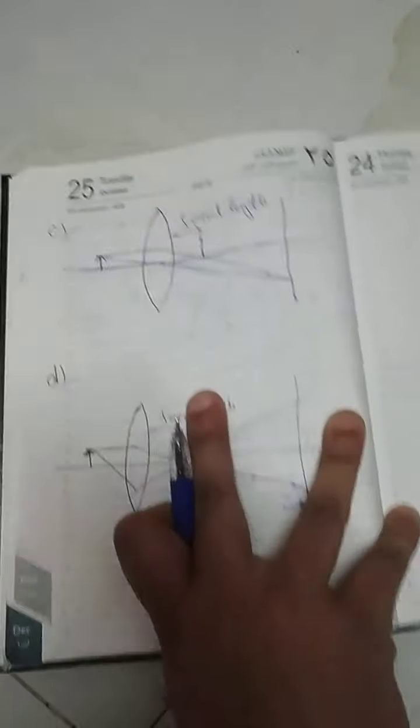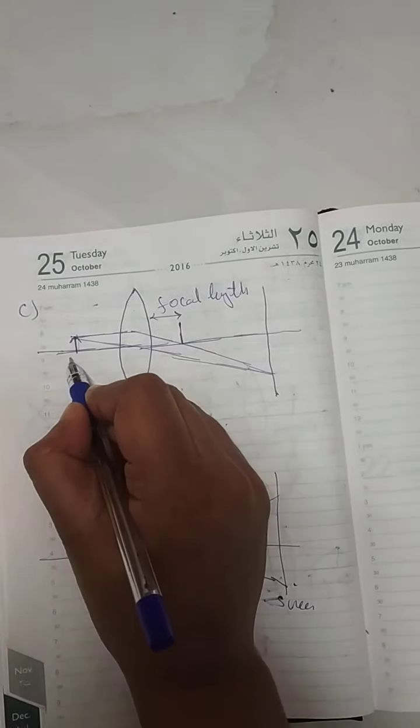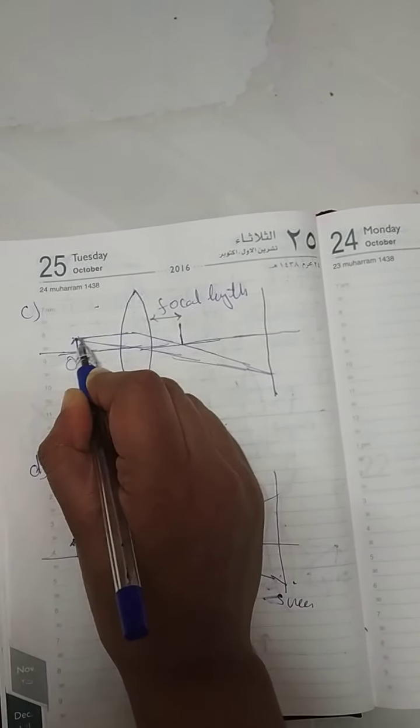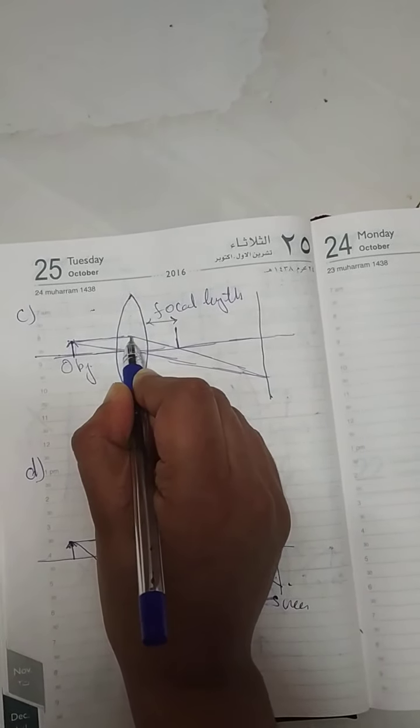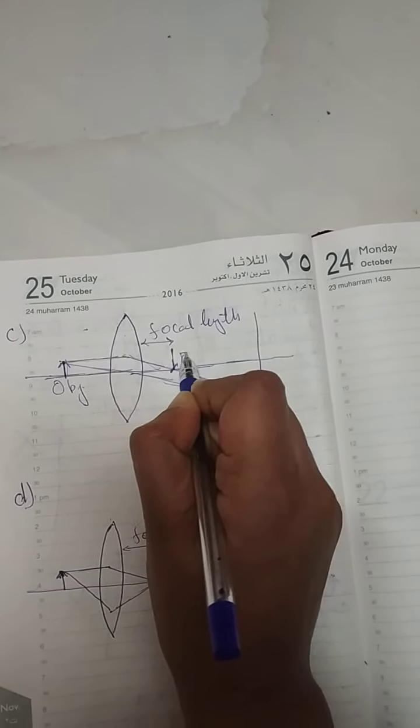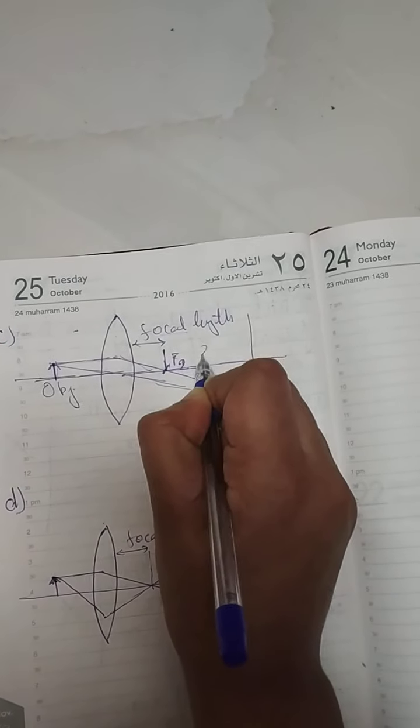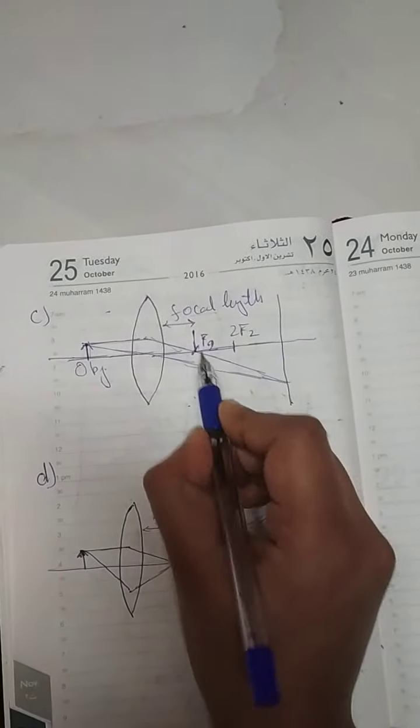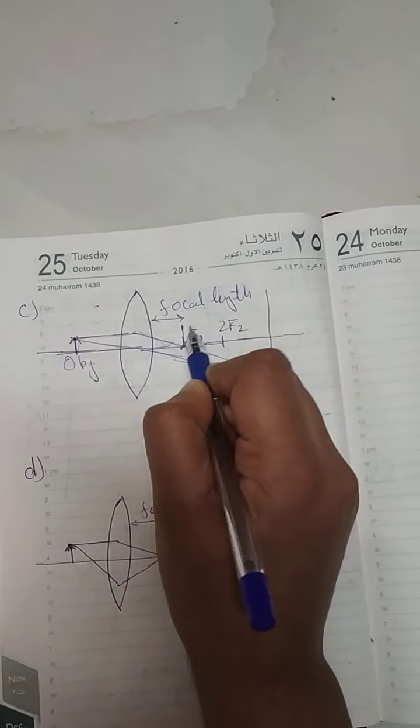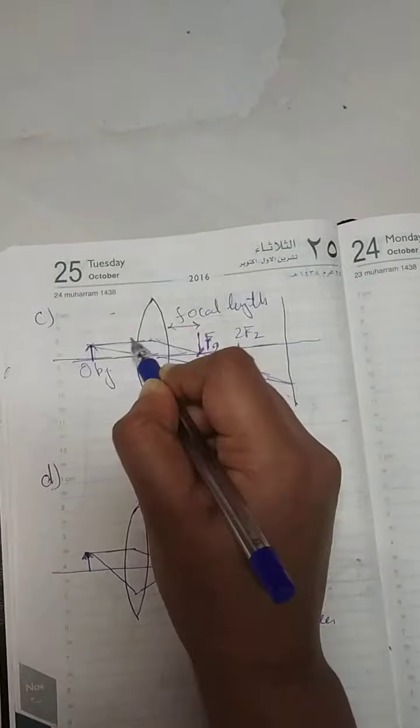In the third option, this is my object and a line is parallel to the principal axis. After refraction it's passing from focus f2. This line is correct. The second ray goes through the optical center, so it goes straight and never bends.